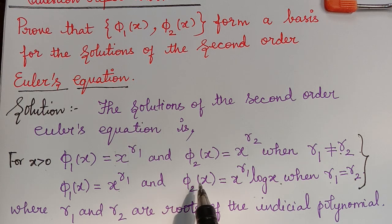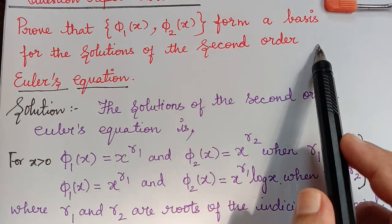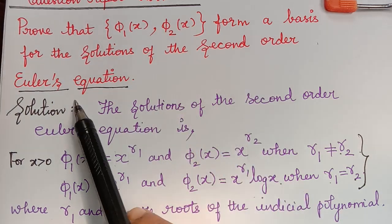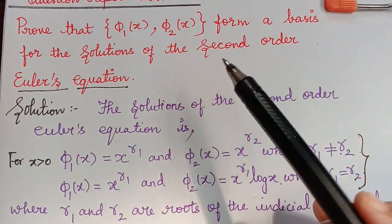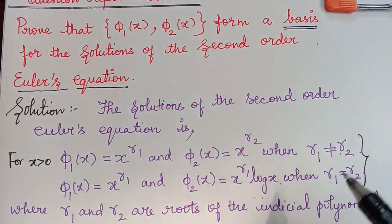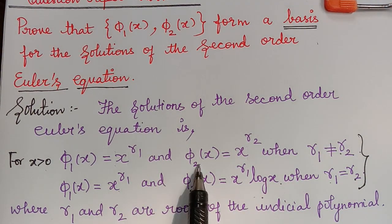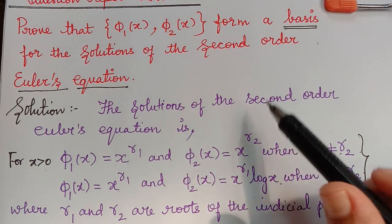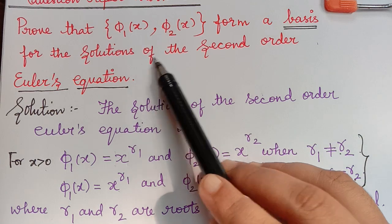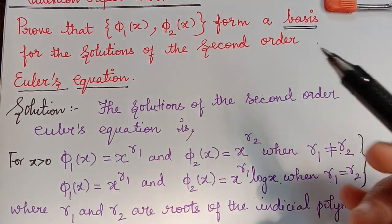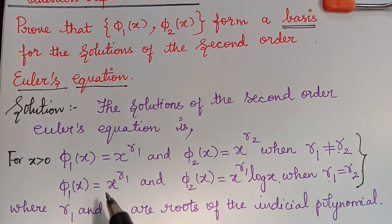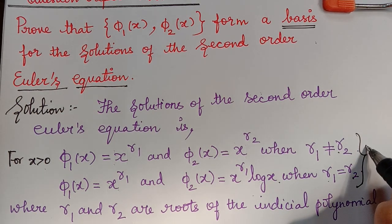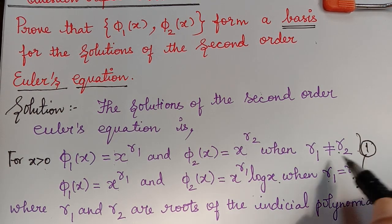Now we have to show that these solutions, φ₁(x) and φ₂(x) in both cases, form a basis for the solutions of the second order Euler equation. In order to show that they form a basis, it is enough to show that these two solutions are linearly independent. The task is to show that φ₁(x) and φ₂(x) are linearly independent in both cases.